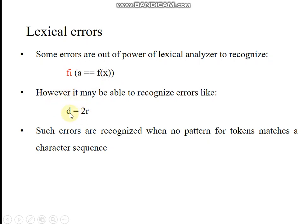However, the lexical analyzer will recognize an error in something like 'd = 2r', because '2' is a number and 'r' is a variable with no operator between them. Either there should be an operator between them, or the letter should come before the number. This violates token-forming rules, so this error can be identified by the lexical analyzer.